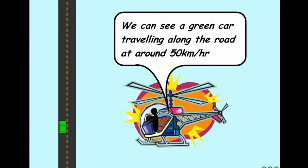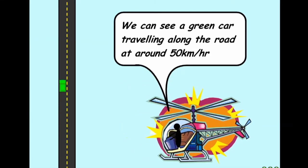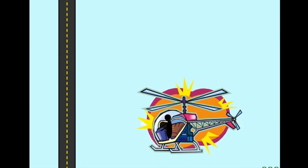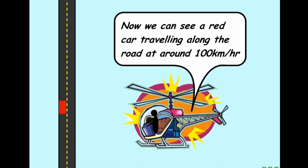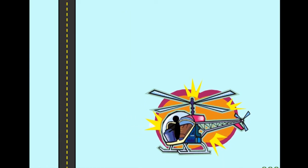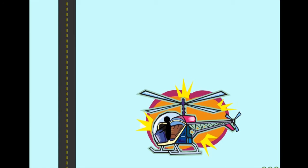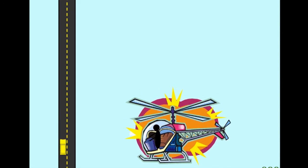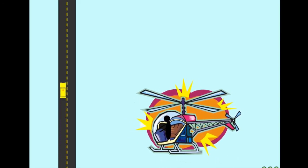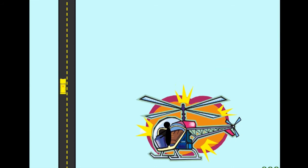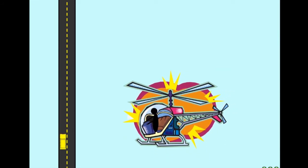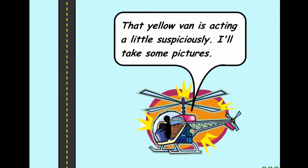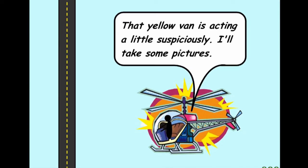We can see a green car traveling along the road at around 50 km per hour, and now we can see a red car traveling along the road at 100 km per hour. Now there's a yellow van. That yellow van is acting a little suspiciously. I'll take some pictures.